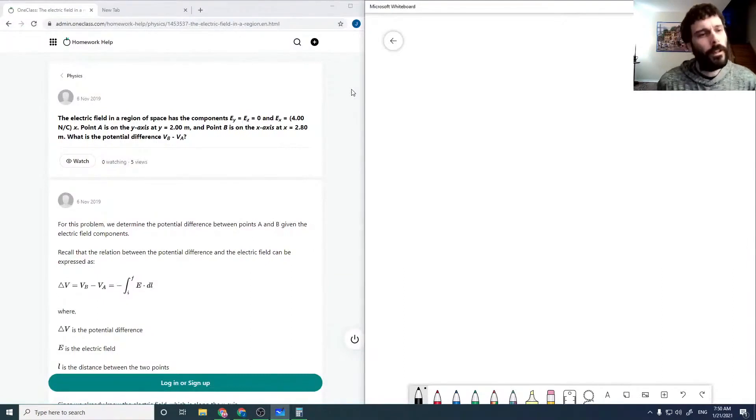We've got an electric field in a region of space with E_Y equals E_Z equals zero and E_X equals four newtons per coulomb in the X direction. So E_X equals four newtons per coulomb.